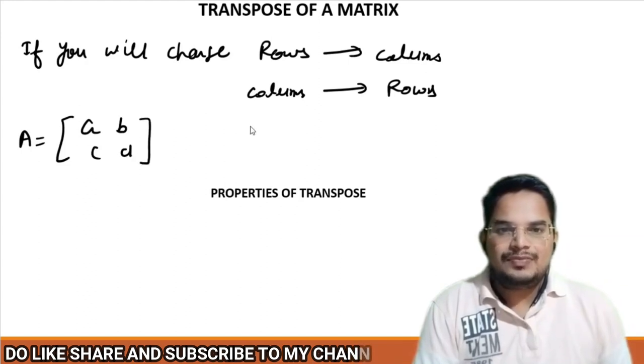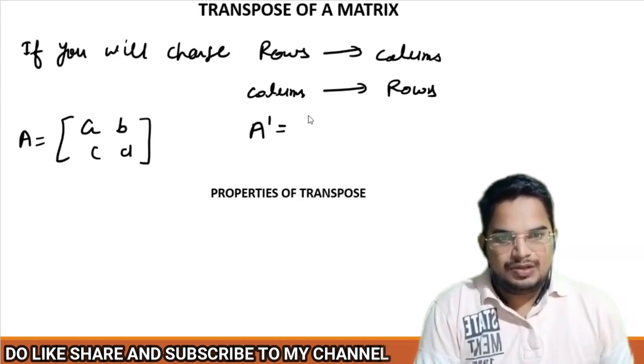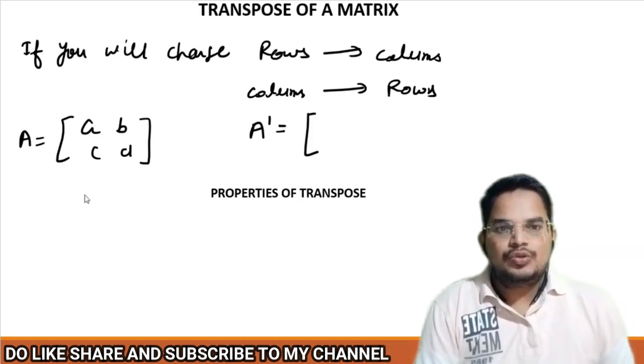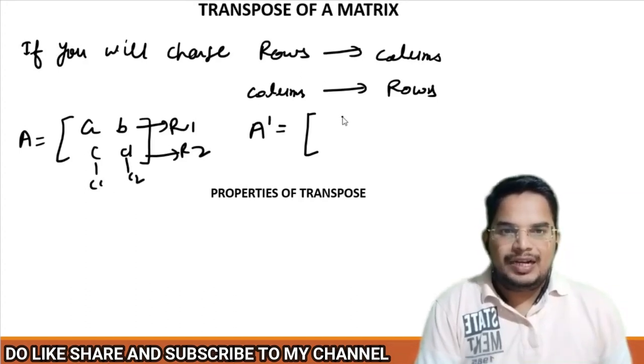If we have a matrix, then we represent the transpose of a matrix as A dash. Now what will happen? Now the row will be converted into columns. This is the row, this is r1, this is r2, this is c1, this is c2. So what I will write down, I will write down like this: a, b, c, d.